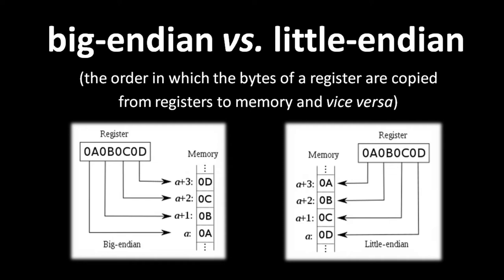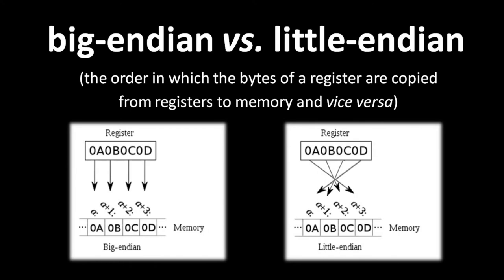Many sources insist that the choice between big Endian and little Endian is completely arbitrary, that they make equal sense — but don't listen to those sources. If we imagine memory as a horizontal array of bytes, the addresses must increase left to right by Western convention. Likewise, Western convention tells us to write numbers with the most significant bytes on the left. So if we think of memory horizontally, it makes no sense to use little Endian. Unfortunately, for historical reasons relating to performance, Intel and some other CPU makers chose the little Endian scheme, and the x86 architecture is still stuck with little Endian byte ordering.